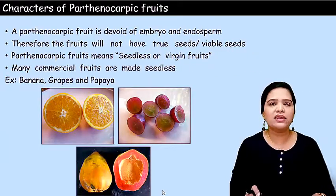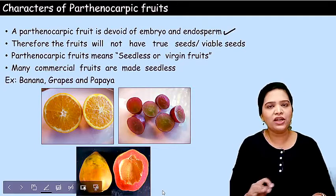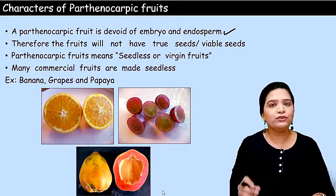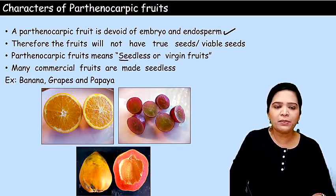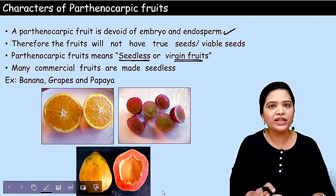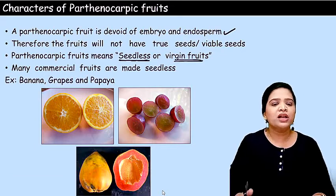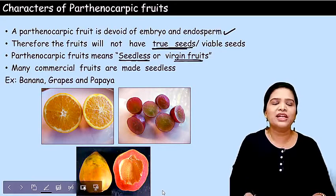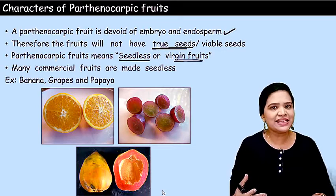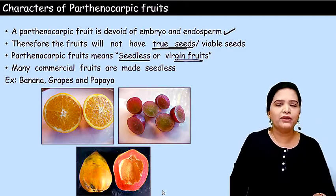The characteristics of parthenocarpy fruits: the fruit is devoid of embryo and endosperm — it won't have embryo, it won't have endosperm, and the fruit will not have seed. We call these parthenocarpy fruits seedless fruits or virgin fruits. Even if seeds are present in some plant varieties, they are not true seeds — they are non-viable seeds. From those seeds, the next progeny cannot be developed or produced.